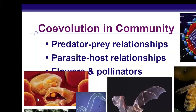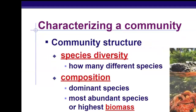So coevolution is when two organisms rely on each other, and over evolutionary time they've evolved traits that benefit each other. Examples include predator-prey relationships, parasite-host relationships, and flowers and pollinators. We've seen like bats or hummingbirds — the beaks of finches have evolved similarly with the flower or whatever it is that they're pollinating, so that their beaks, their snouts, whatever, fits that flower. That would be an example of co-evolution.